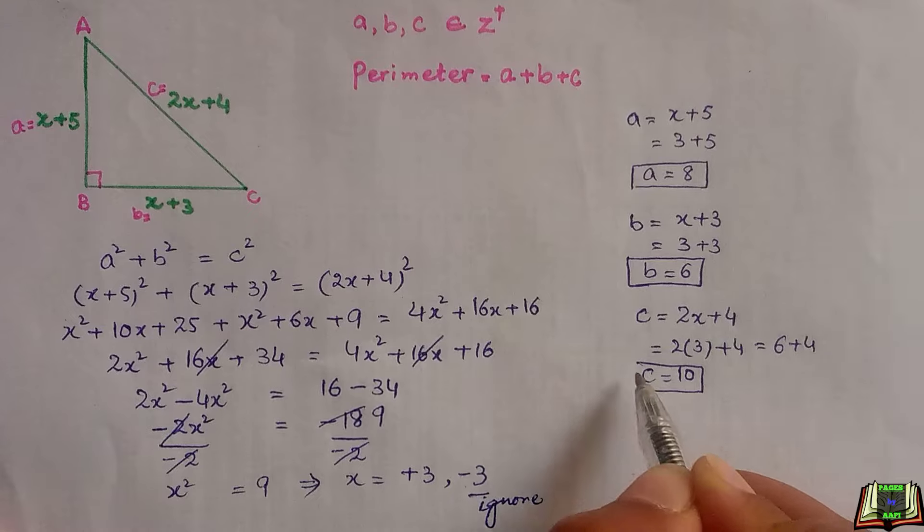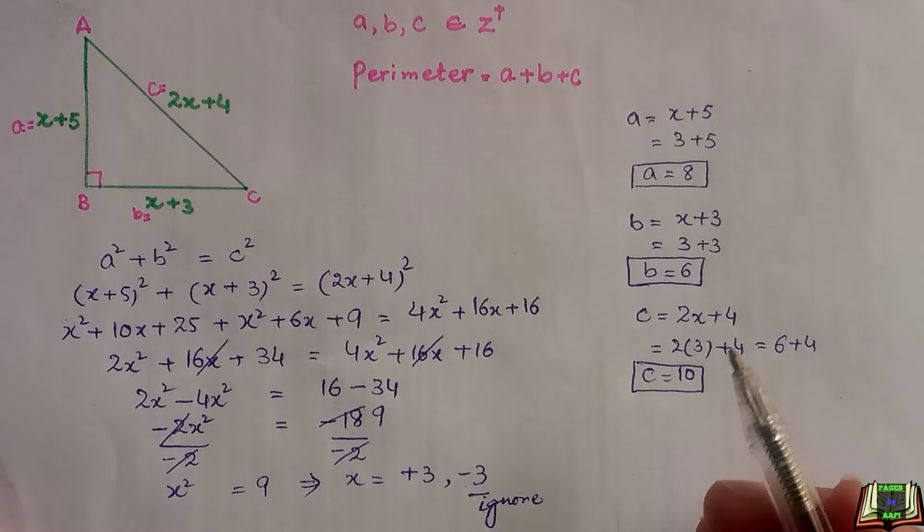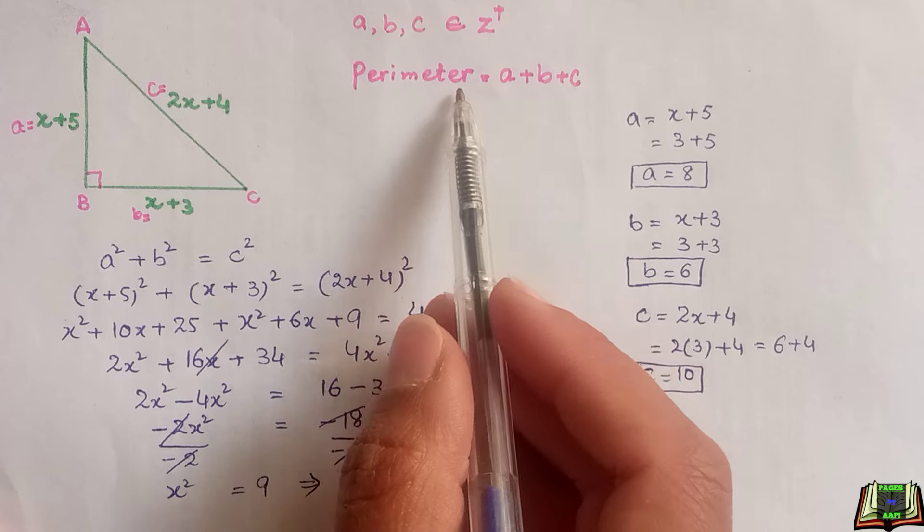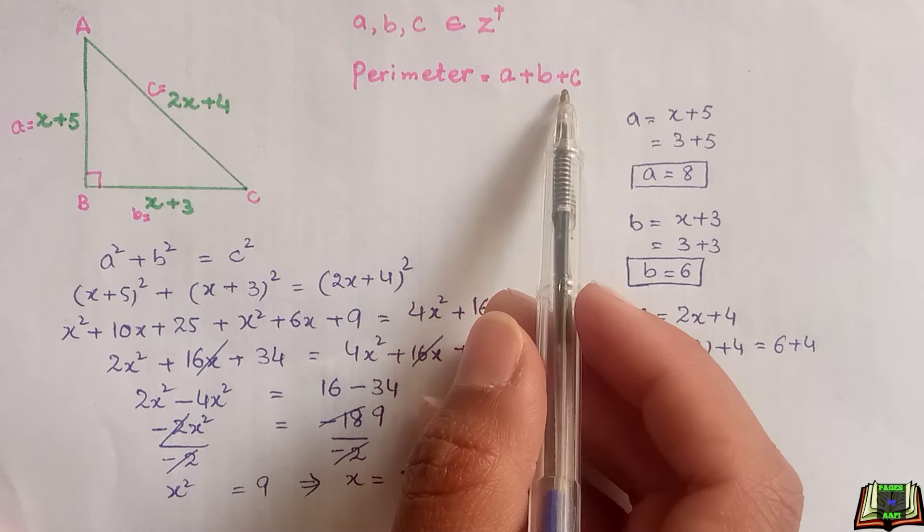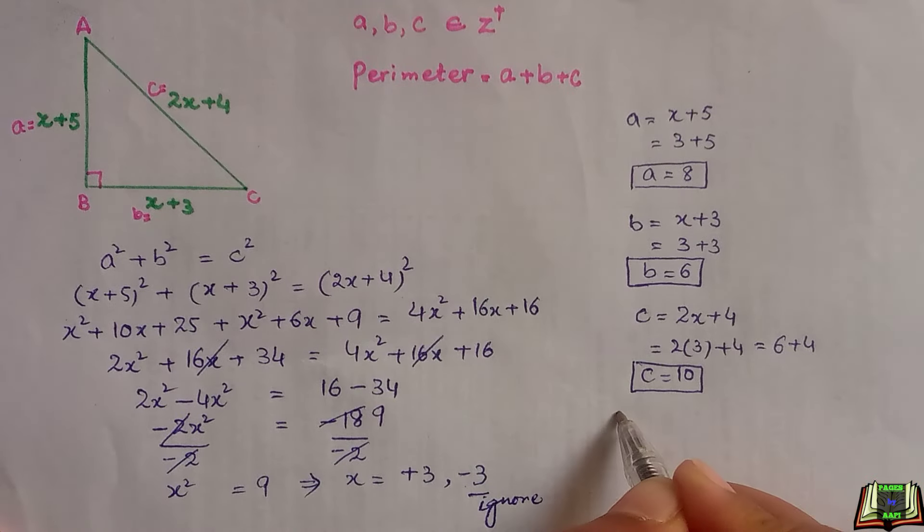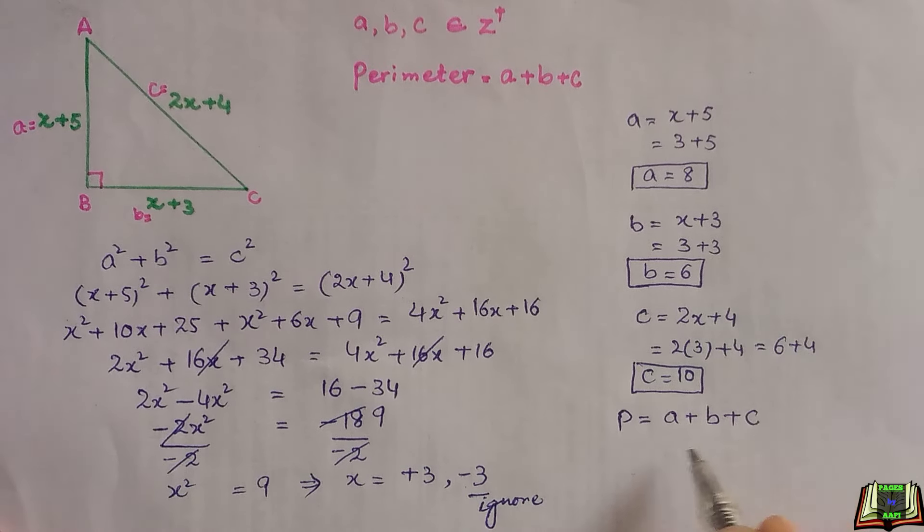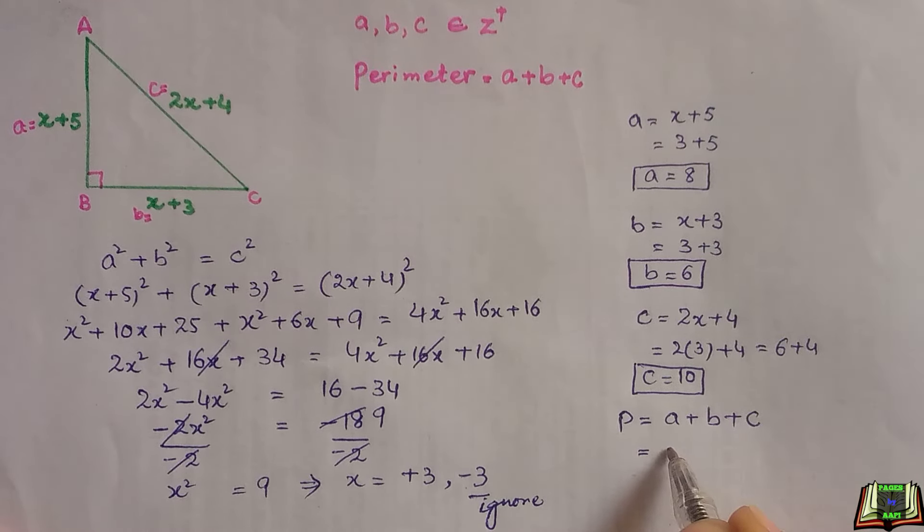Now we got the values of three sides a, b, and c. We can find out the perimeter, that is a plus b plus c. So perimeter is equal to a plus b plus c.